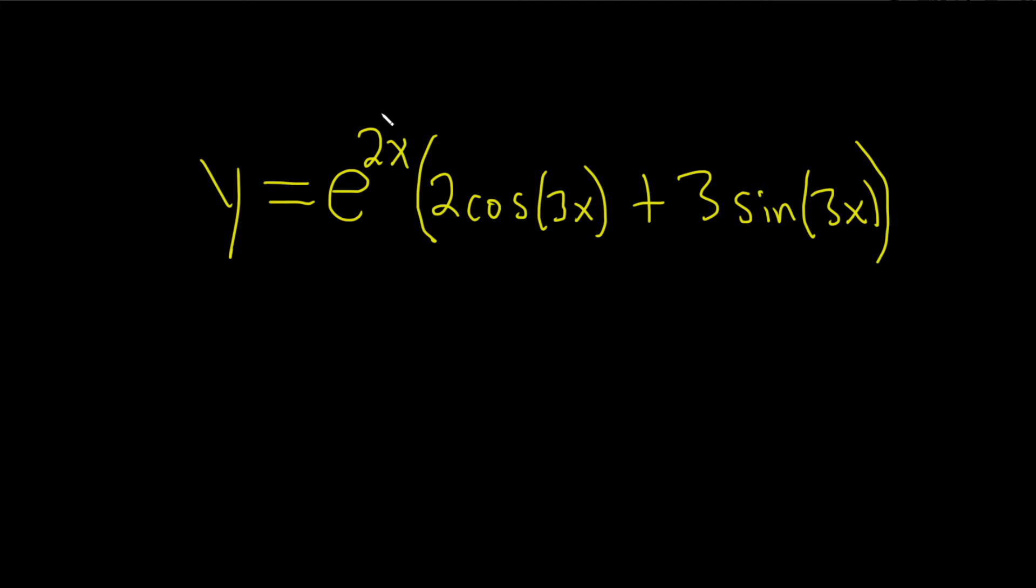Before we do, let me refresh your memory on the product rule. The product rule says if you have a function f times a function g and you want to take the derivative of this product, think of f as your first function and g as your second function. So it's the derivative of the first times the second plus the first times the derivative of the second.